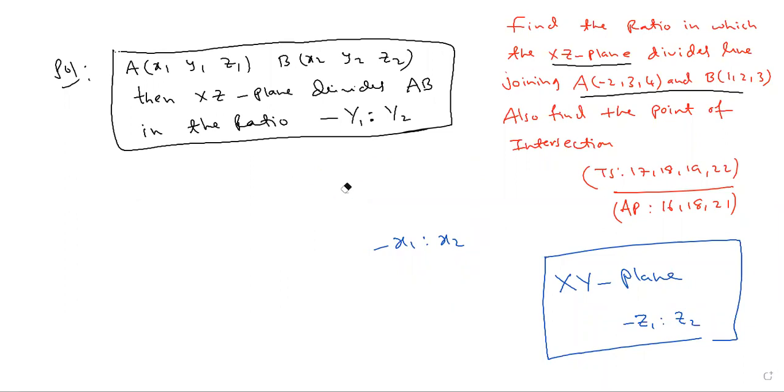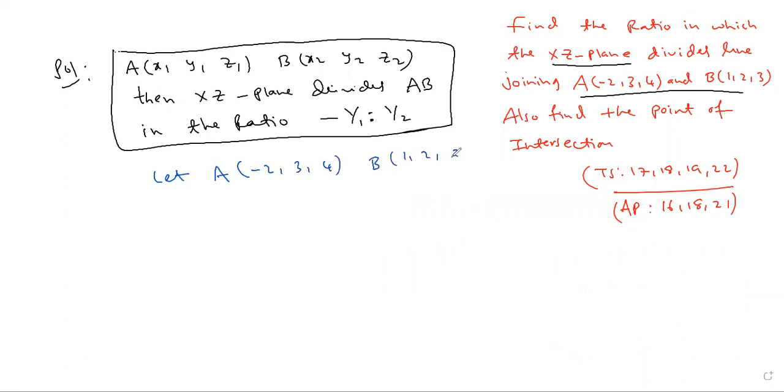So if you have the formula, you can solve the question. XZ plane is -Y1 to Y2. Let A be given as (-2, 3, 4) and B given as (1, 2, 3).